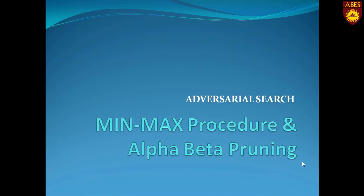Hello friends, in this video we are going to discuss a very important topic of artificial intelligence — adversarial search. We have various types of search techniques, out of which one important one is adversarial search. In this particular search technique, we are going to study two important subtopics: the min-max procedure and alpha-beta pruning. Now let's start with the slides.